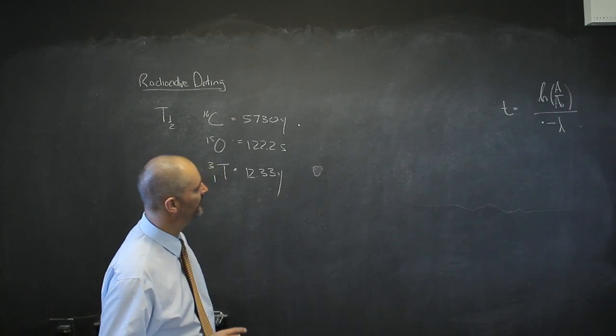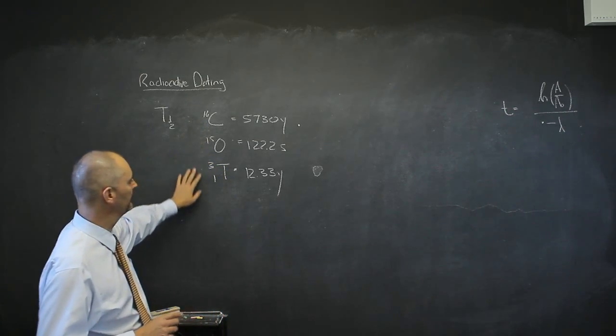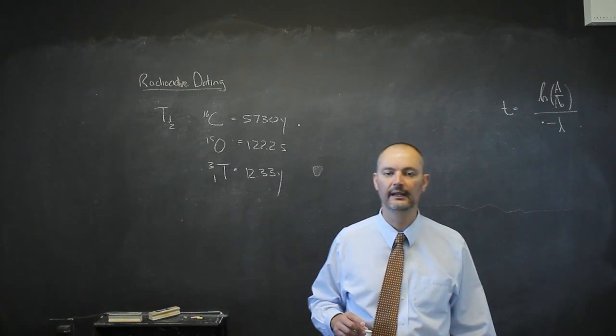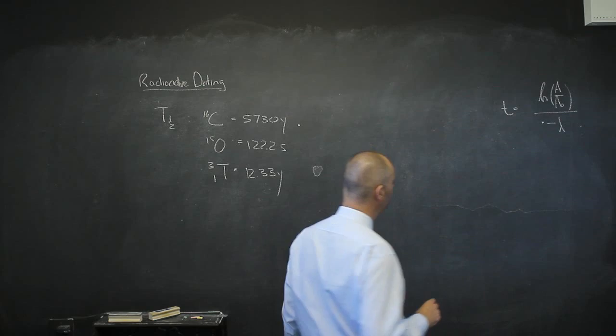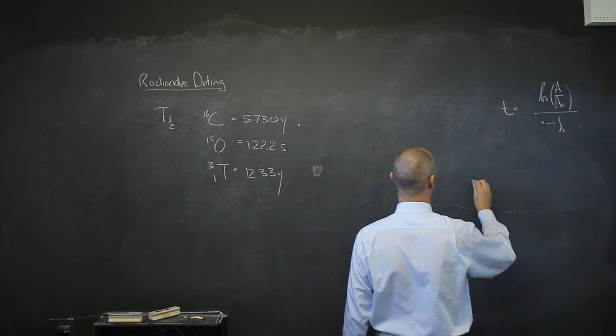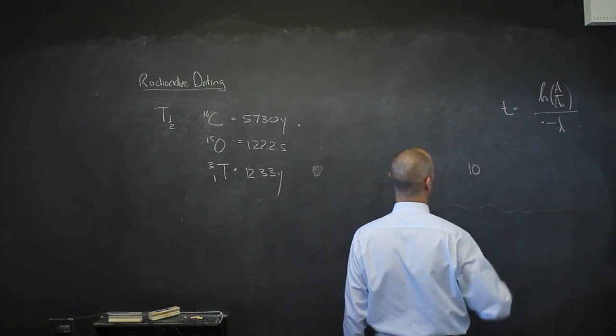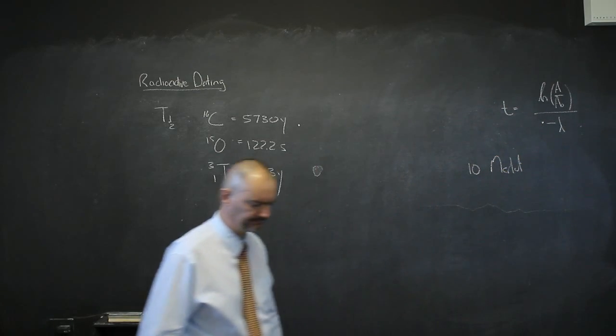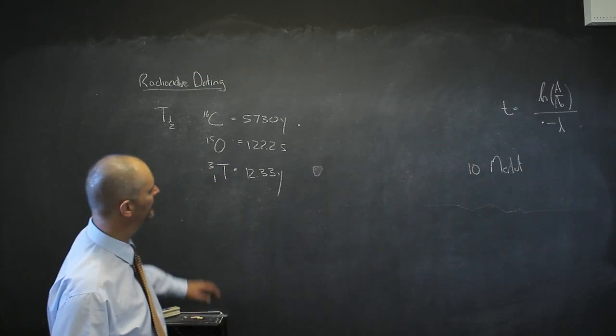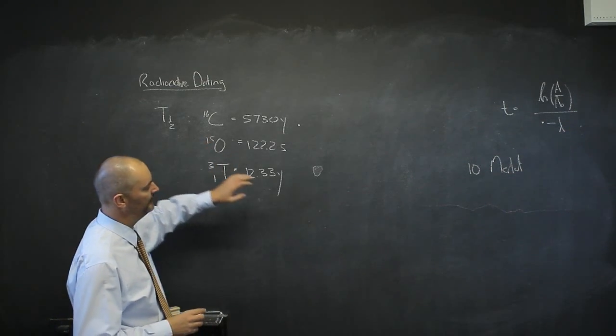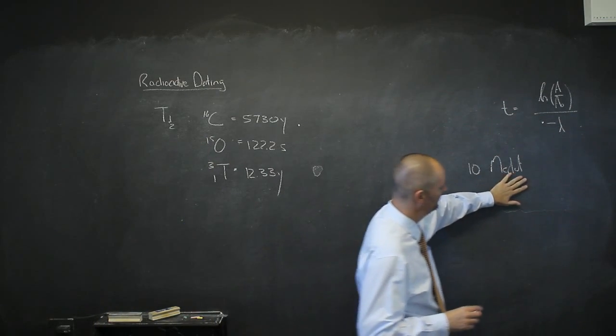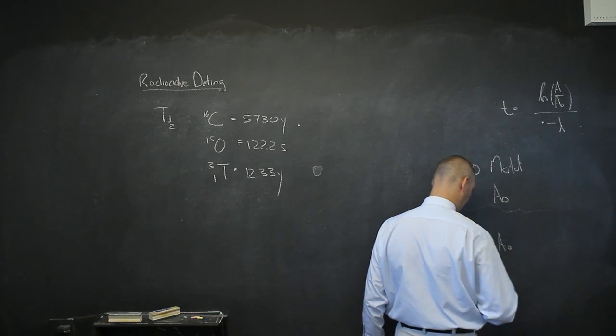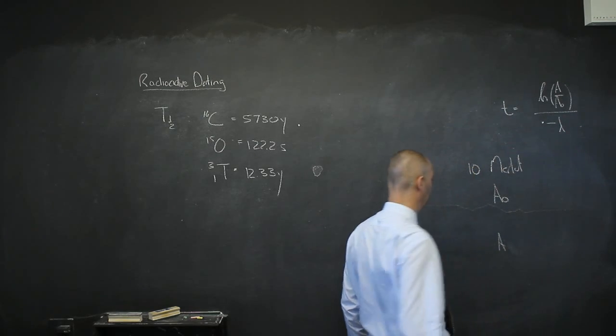Let's look at which of these radioactive isotopes would be best if I'm not looking for 5,300-year-old skeletal remains, but a bottle of 10-year-old Merlot. Which of these would be best? 10 years ago when this bottle was sealed, I knew what the activity was then, and I can look at what the activity is today.